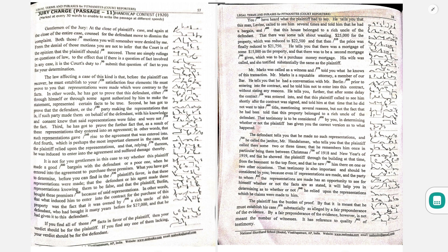There was some talk about wanting $25,000 for the property, which was reduced to $22,500, and that then the price was finally reduced to $21,750. He tells you that there was a mortgage of some $15,000 on the property.